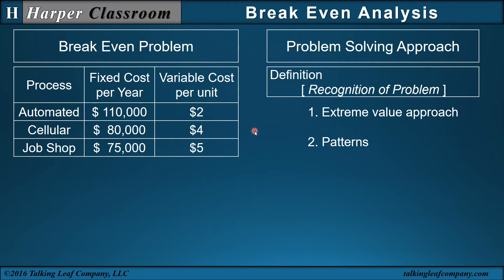So for very low production, job shop will be the lowest cost. For very high production, automated will be the lowest cost. Since they're different, there must be a production between zero and a million such that the cost is going to be the same, and that's break even.